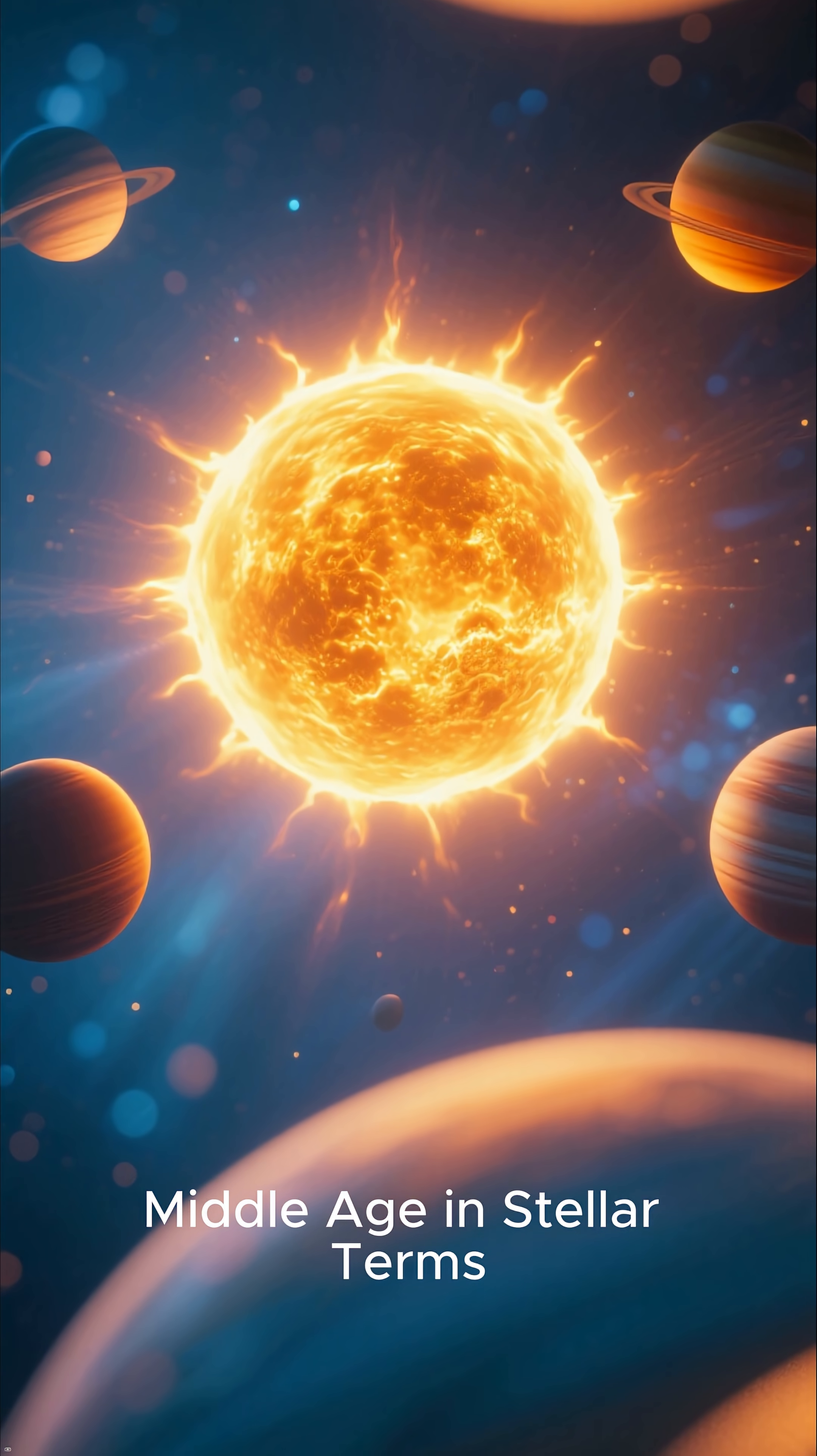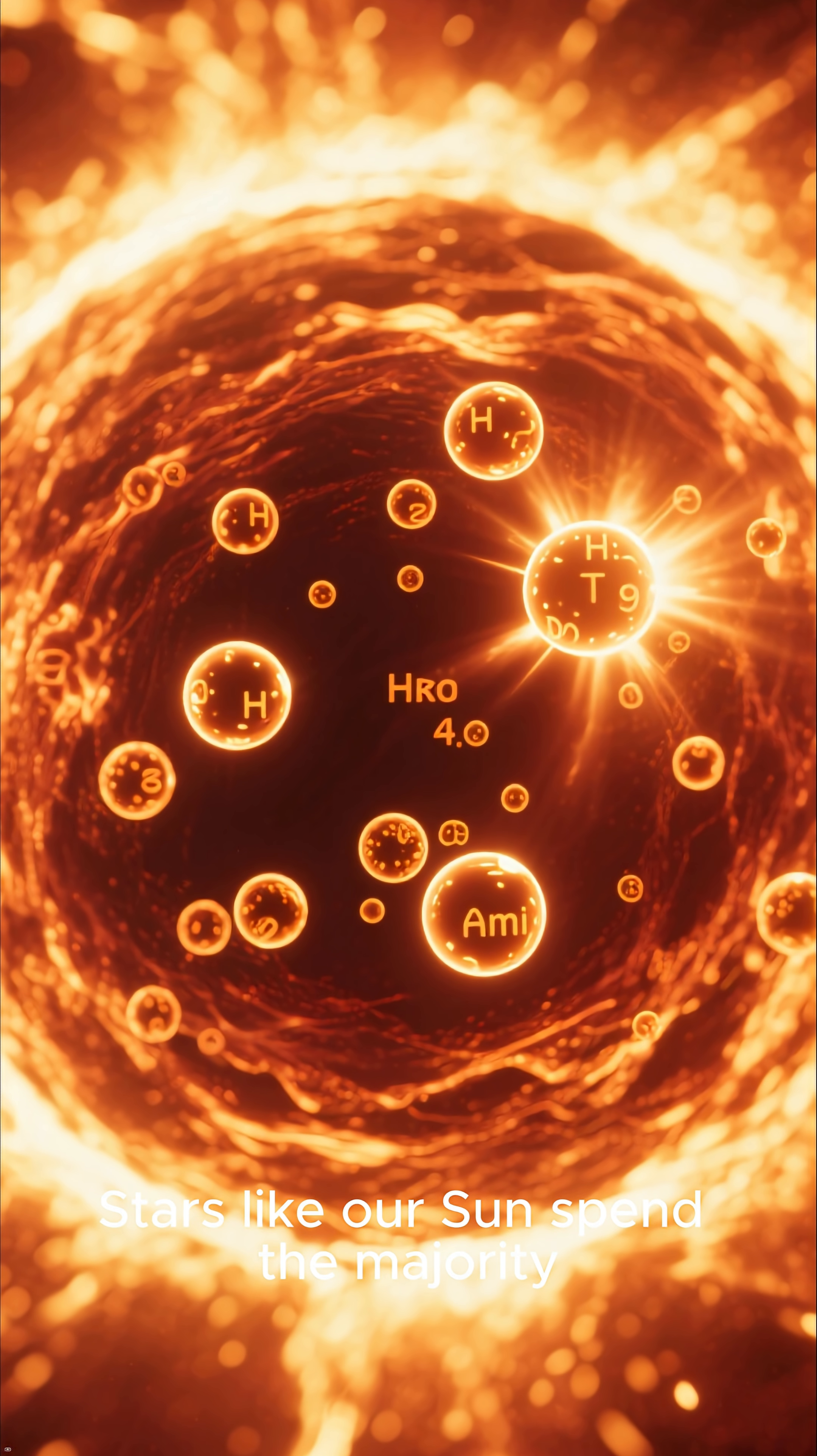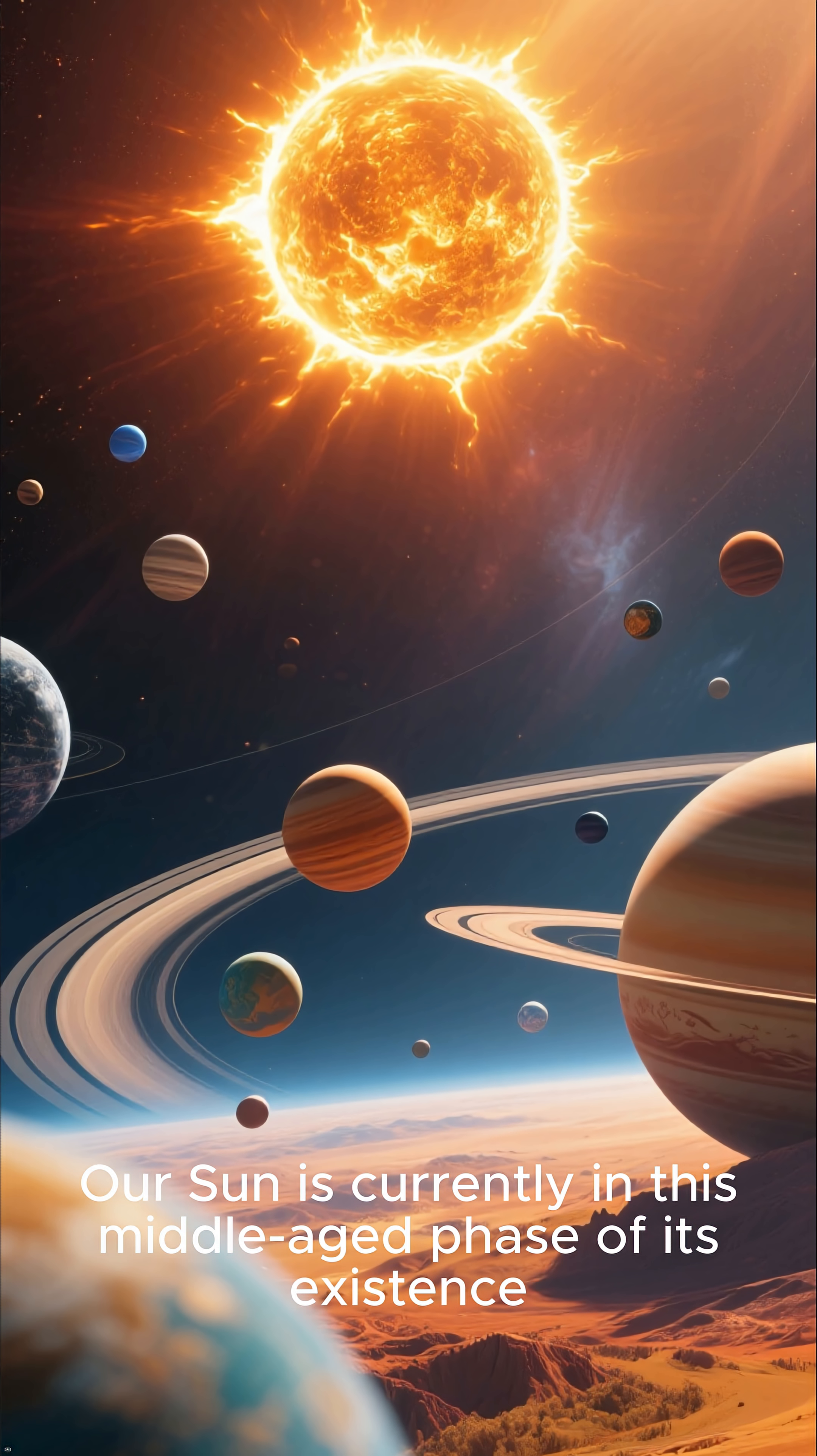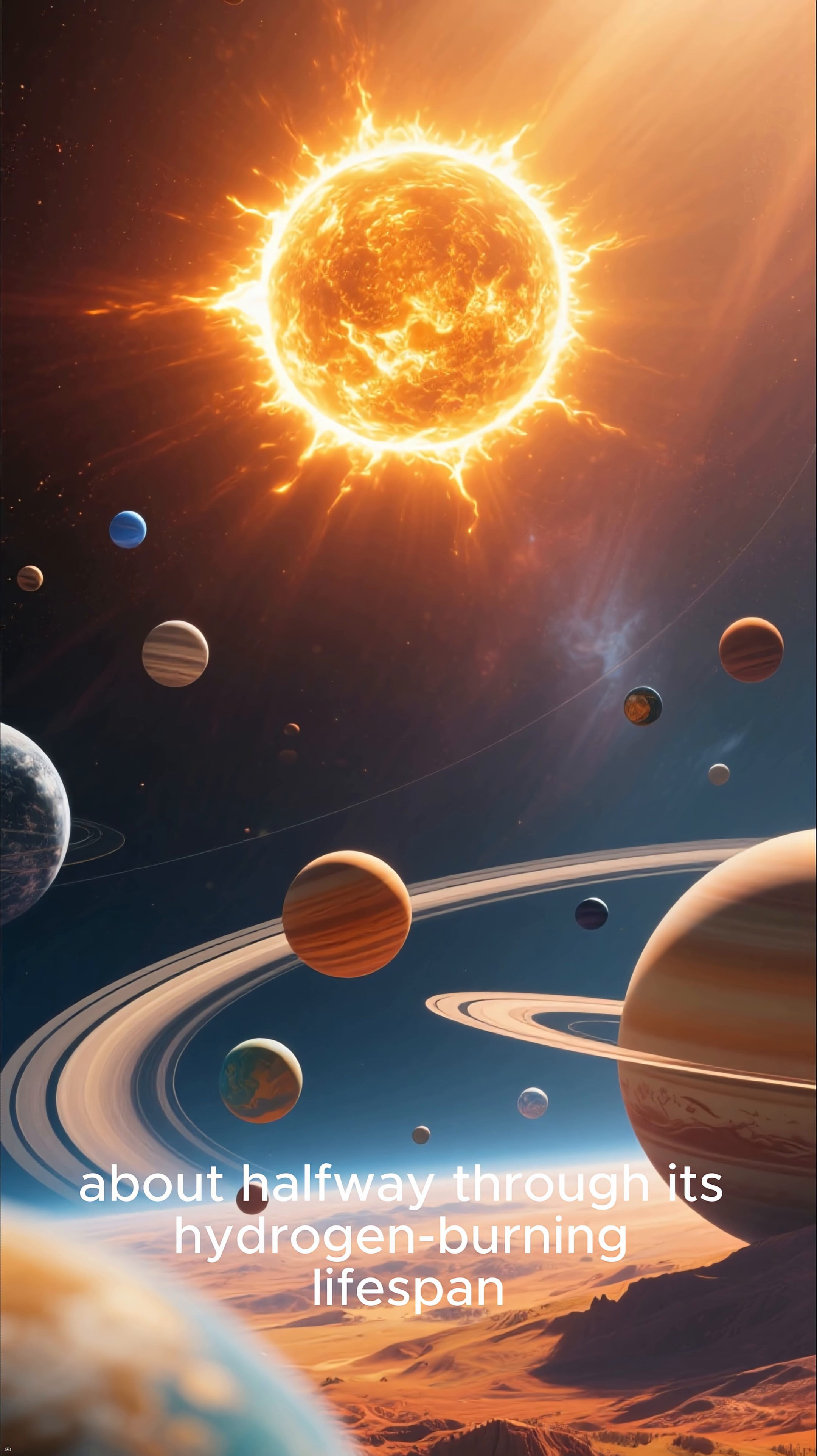Middle age in stellar terms now, let's consider where the sun is in its life cycle. Stars like our sun spend the majority of their lives fusing hydrogen into helium in their cores, a stable phase known as the main sequence. Our sun is currently in this middle-aged phase of its existence, about halfway through its hydrogen-burning lifespan.